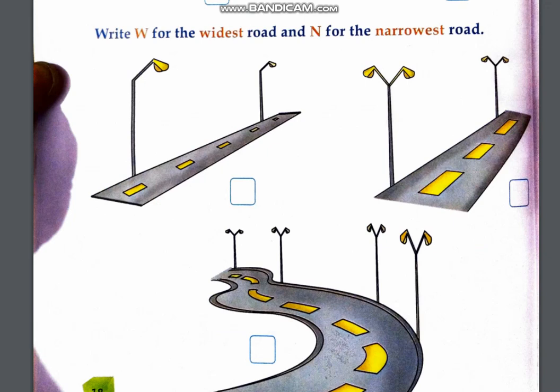Next, write W for the widest road and N for the narrowest road. That means you have to write W for widest, meaning the road which is the most wide, and N for narrowest, meaning the road which is the most patla. If you look and identify, the most patli road is the first one, so you will write N here.